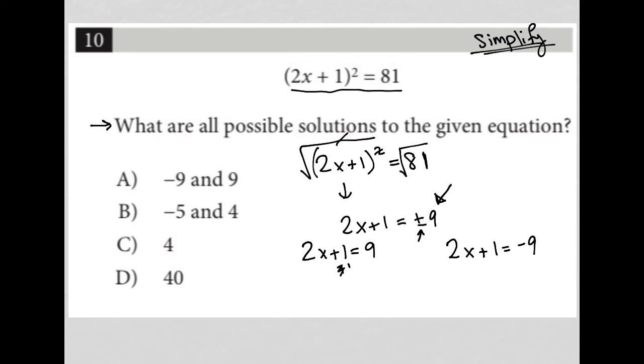So to do that, I subtract 1 from both sides here. So I'm left with 2x equals 8 and divide by 2, I'm left with x equals 4.